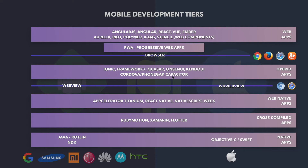Capacitor is a replacement for Cordova in Ionic apps. You can use Capacitor not only for Ionic projects — you can create any sort of Node.js project and add Capacitor to it. With Capacitor, you'll be able to wrap your project in a web view and run it on mobile devices. Capacitor also leverages Cordova plugins, so you can still use Cordova plugins with Capacitor. And of course, you can still use Cordova with Ionic projects.